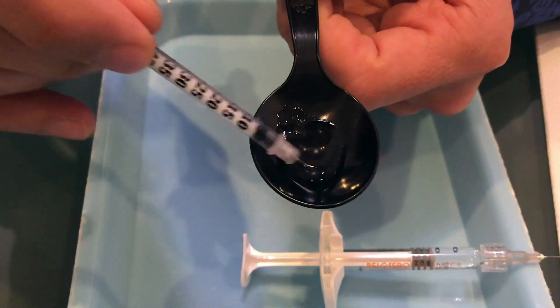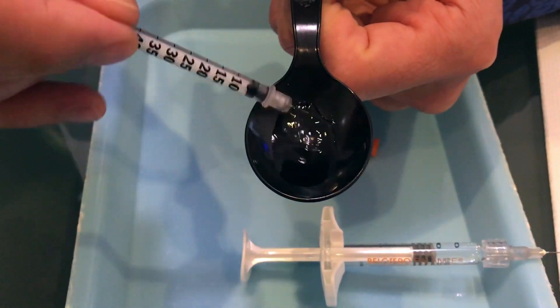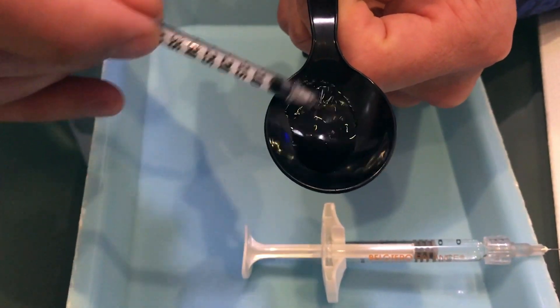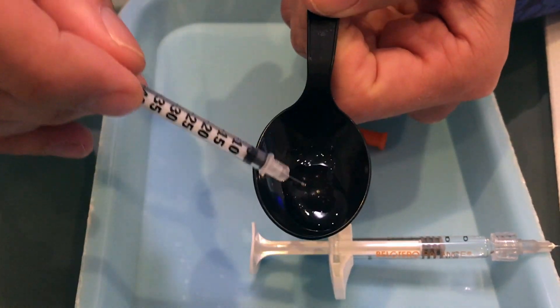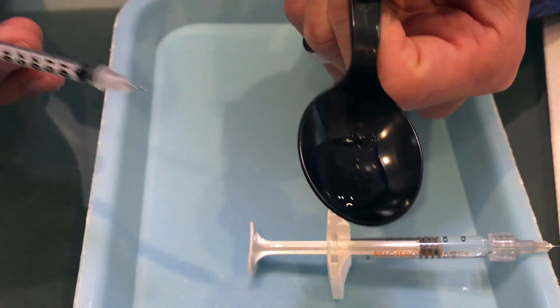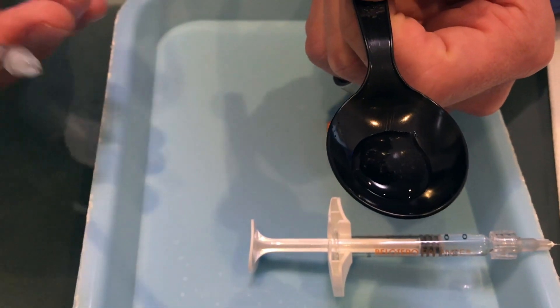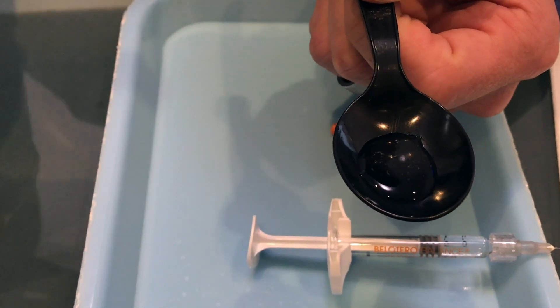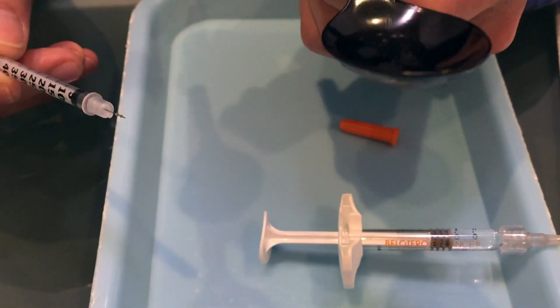So that kind of goes to show you it takes around 0.5, 0.6 cc's of the Hylinex to dissolve. So about one to one volume of Hylinex to the filler of Bellatero.